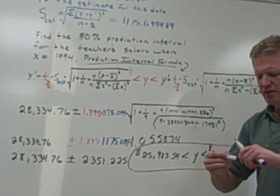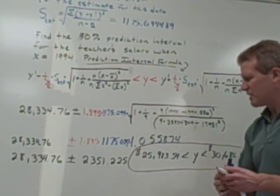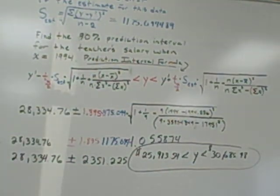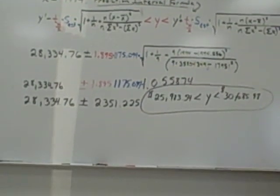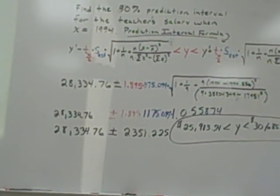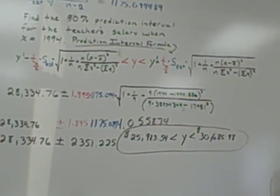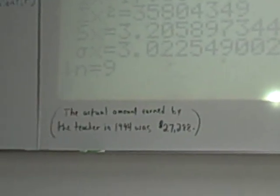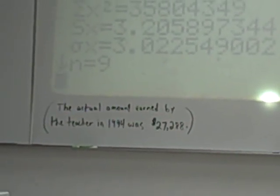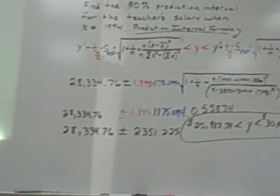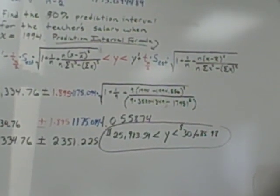So what this means is that if I collected data and used a random set of nine data points, 90% of the time the actual salary in 1994 will fall in this interval, which means 10% of the time it won't. So let's look to see if it did in this case. You can see at the bottom of the screen, the actual amount earned in 1994 was $27,288, which does fall in this interval.